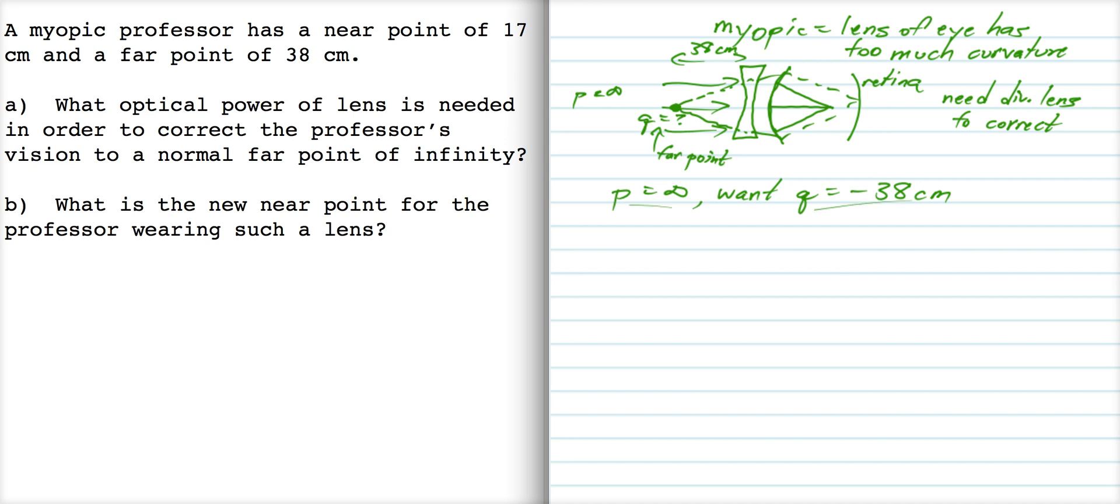So with that object distance and that image distance, we just got to find the focal length. So 1 over infinity plus 1 over negative 38 is 1 over f, so f is negative 38 centimeters.